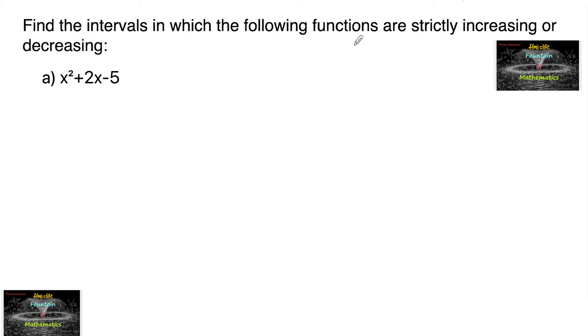Find the intervals in which the following functions are strictly increasing or decreasing. The given function here is f(x) equals x squared plus 2x minus 5.